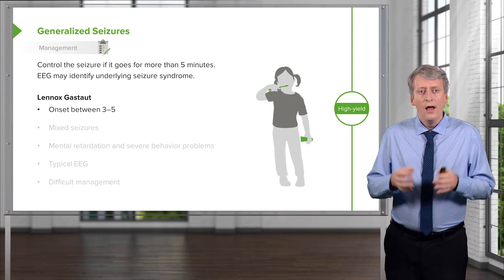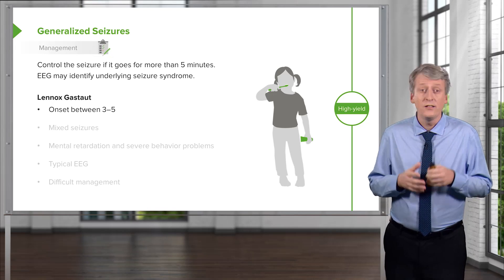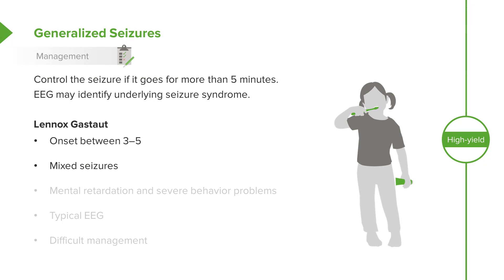Let me give you an example. Lennox-Gastaut syndrome has an onset typically between three and five years of age. These patients have mixed varieties of seizures and may develop mental retardation and severe behavioral problems. It has a very typical EEG pattern. Most of us don't need to know how specifically to read EEGs, but we should be aware that certain patterns give away certain diagnoses — and Lennox-Gastaut does have a typical EEG appearance. It's important to make this diagnosis because it is a difficult-to-manage disease that will require the guidance of a pediatric neurologist.